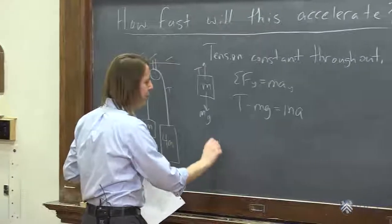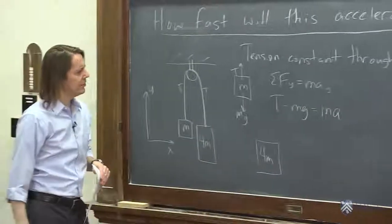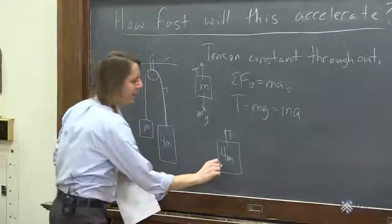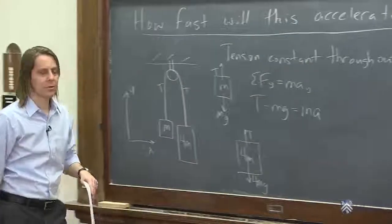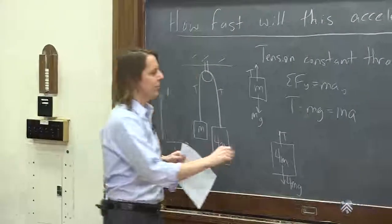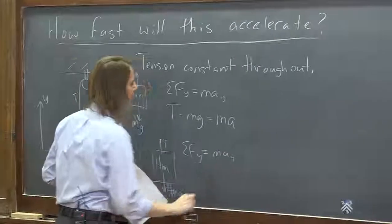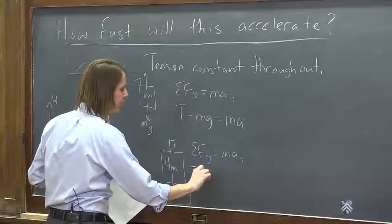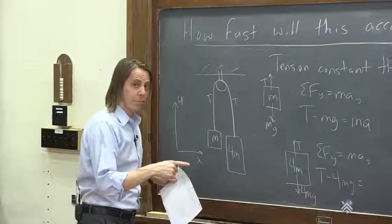Let's do the 4M, the larger mass. Free body diagram. It also has tension T pulling up. It has 4Mg pulling down, larger force pulling down. So sum of the forces in the y equals the mass times the acceleration in the y. So in this case,